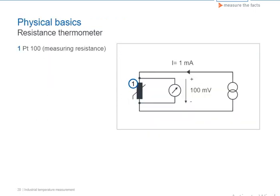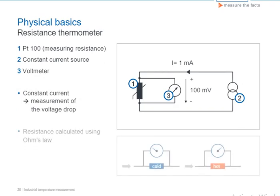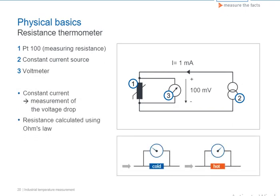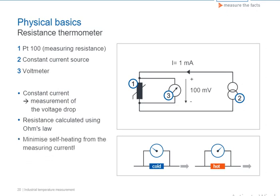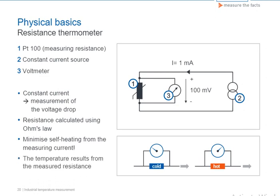As it is not possible to measure the resistance directly, with the help of a constant current source, a current flows over the measuring resistor and the voltage drop is measured. With Ohm's law, the resistance can be calculated from the voltage drop. Care must be taken that the resistor element is not subjected to self-heating from the current. In order to minimize this self-heating error, current flowing over the measuring resistor should be kept small, in any case under 1 mA. Finally, the temperature to which the measuring resistor is exposed ensues from the resistance measured.